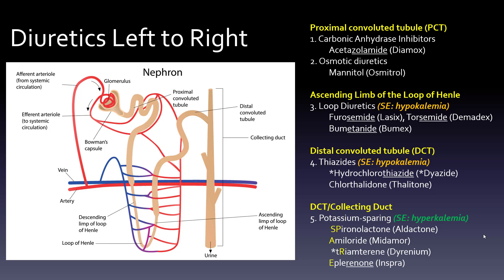Then we move to what would be the Northeast — the distal convoluted tubule, specifically the early part of it. The thiazides also cause hypokalemia. So this middle stretch of the nephron, both the Midwest and Northeast zones, is causing hypokalemia. This includes hydrochlorothiazide (Dyazide, when combined with triamterene) and chlorthalidone (Thalitone).